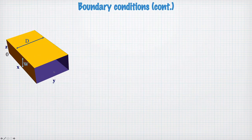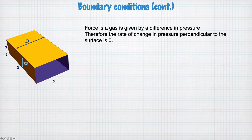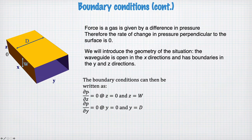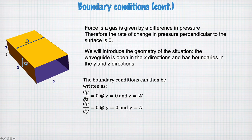Our pipe has propagation in the x-direction with dimension w in z and dimension d in y. The boundary conditions can be written as dp/dz = 0 at z = 0 and z = w, and dp/dy = 0 at y = 0 and y = d. For example, in the y-dimension the derivative of pressure along y must be zero at these boundaries — that's our boundary condition.